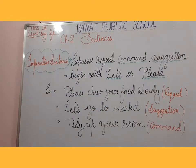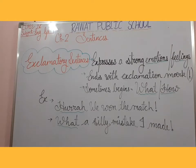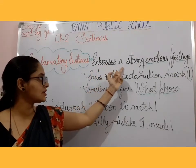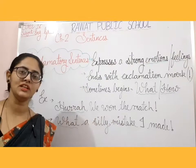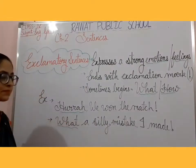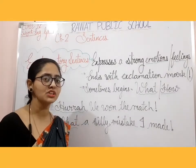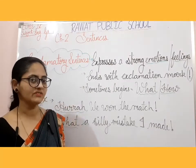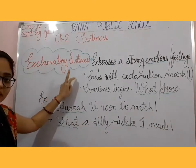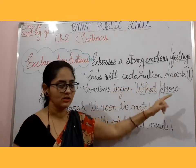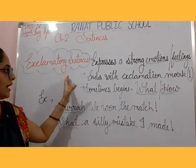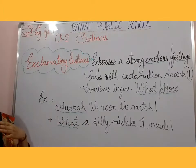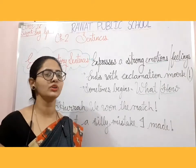Now the third type we are going to see is exclamatory sentences. Exclamatory sentences are those which express a strong emotion or feeling. Emotions and feelings are the same — when we express a strong feeling, those sentences are known as exclamatory sentences. Unlike statements and imperative sentences which end with a full stop, exclamatory sentences end with an exclamation mark.